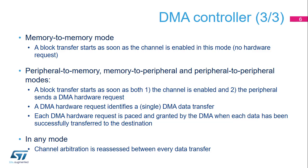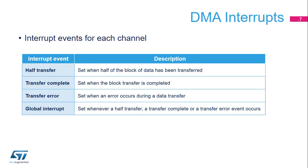In any mode, channel arbitration is reassessed between every data transfer. Each DMA channel can notify software with an interrupt triggered by any of four possible events: half transfer completion, block transfer completion, transfer error, or any of the three above events.